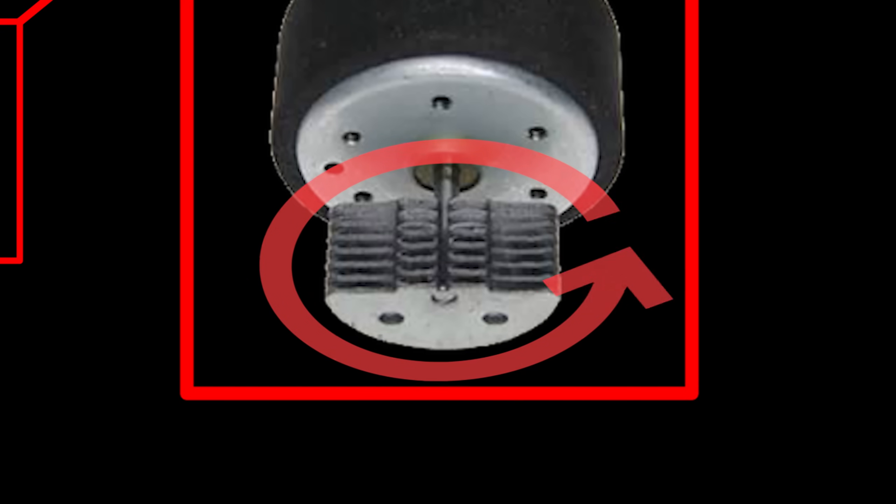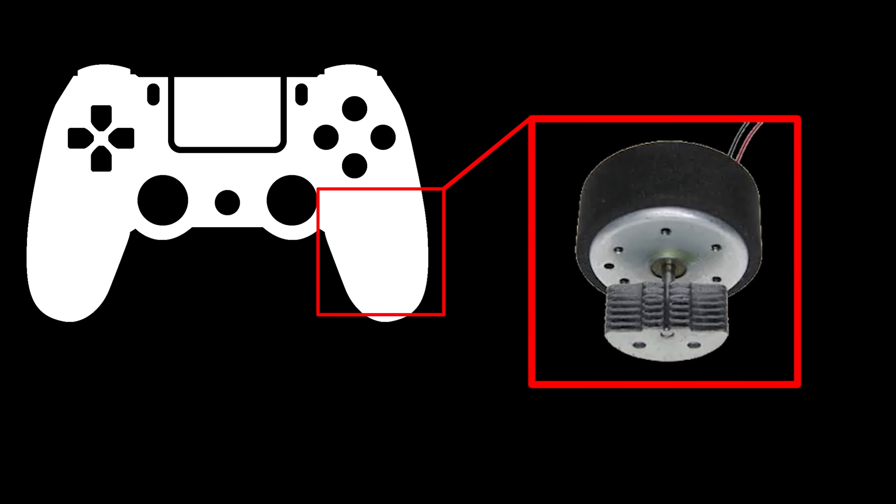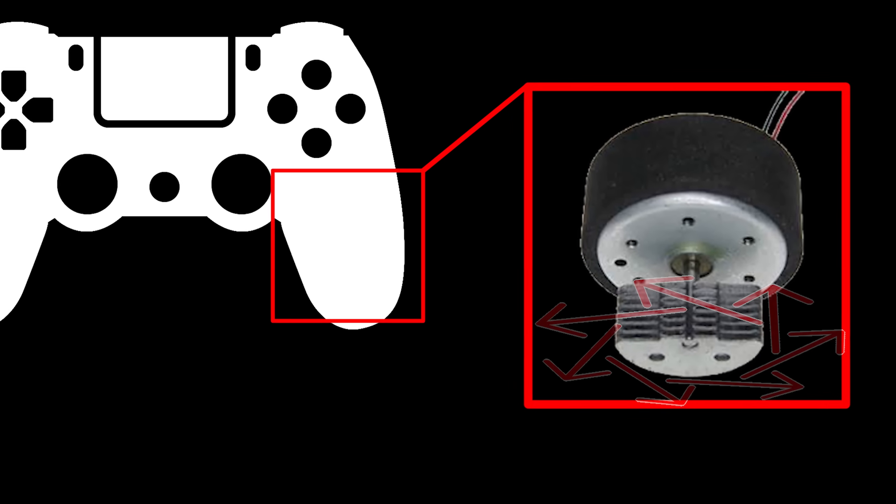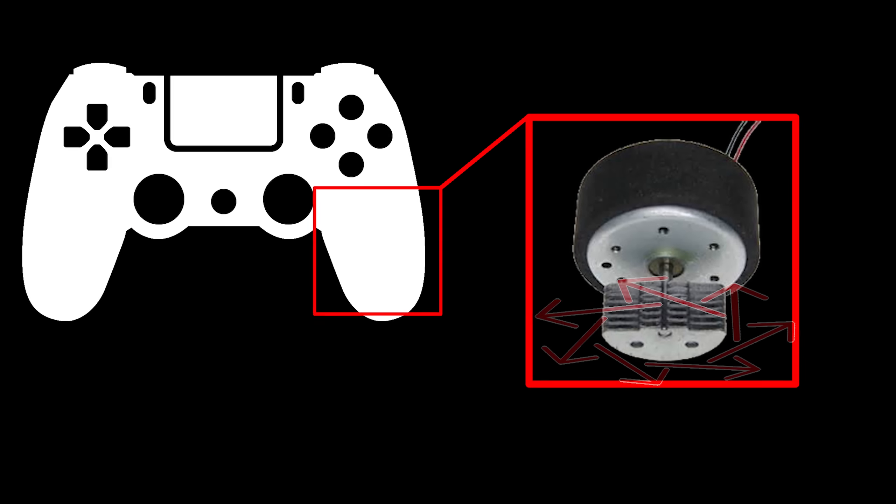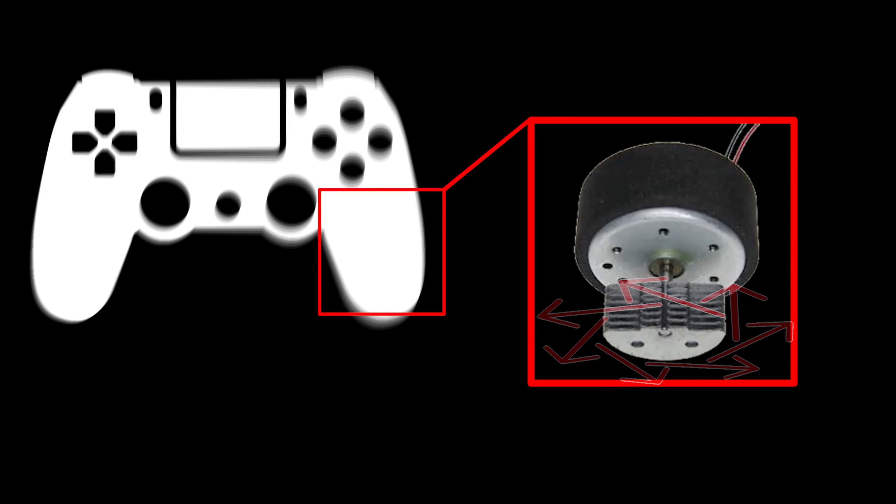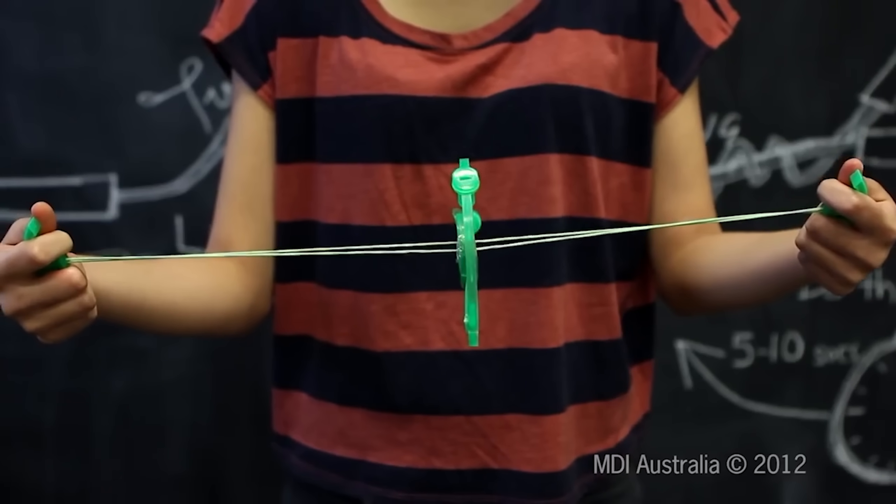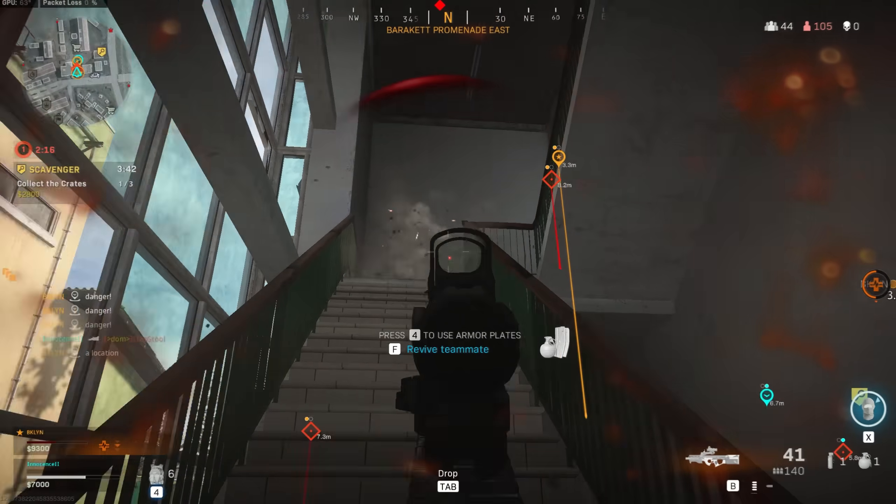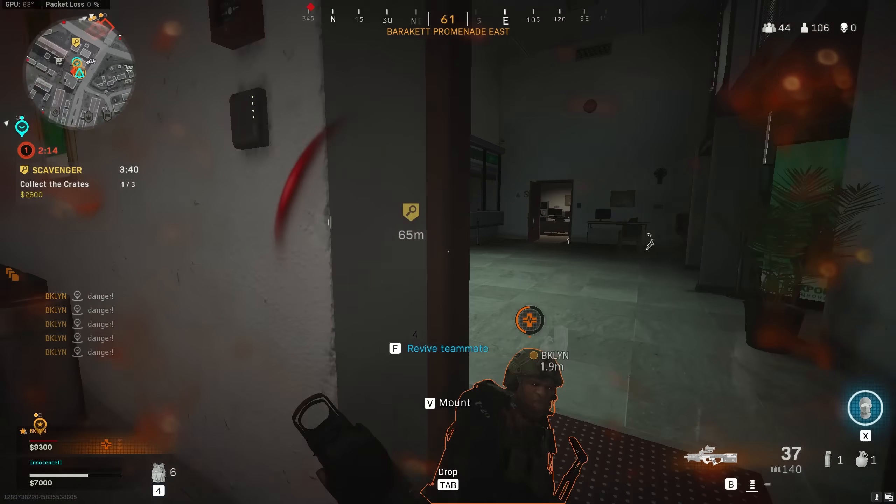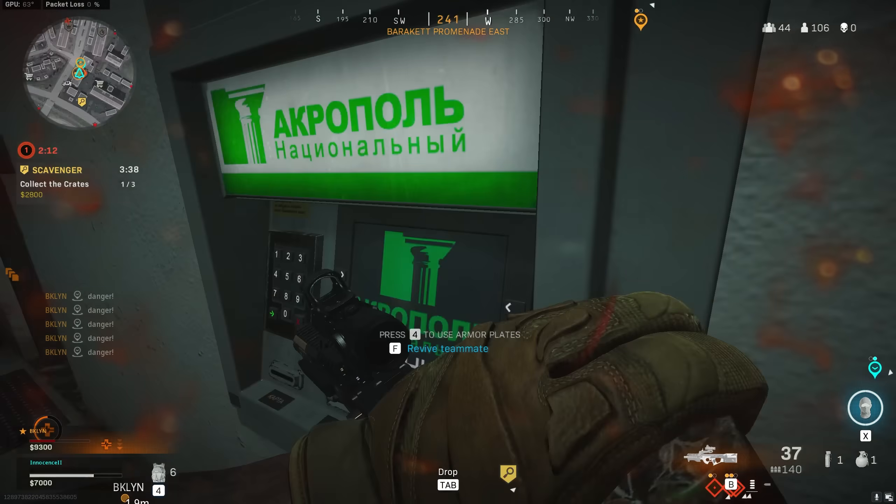And since the metallic piece was purposefully off-center, whenever it began to rotate, inertial forces kind of tugged at it a bit in every direction as it made its way around a full loop, giving off that tried and true vibration feeling we're all used to from controllers nowadays. Very similar to something spinning on the end of a rope.